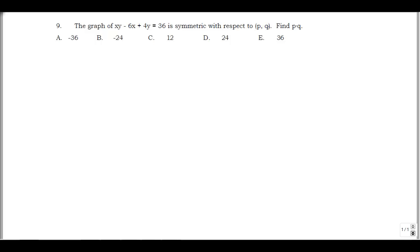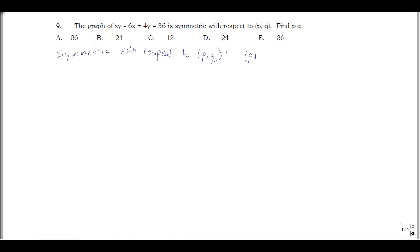We're trying to find p times q. To do this, we have to think about what being symmetric with respect to point (p, q) means. Symmetric with respect to a point means that if we have p plus a, q plus b on the graph — adding a to the x component and b to the y component — that implies we can also get p minus a, q minus b on the graph.